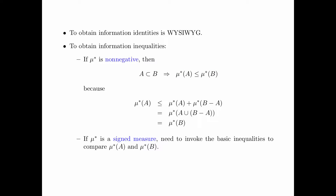If mu star is a signed measure, then it is less straightforward, and we need to invoke the basic inequalities to compare mu star of A and mu star of B.